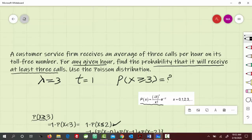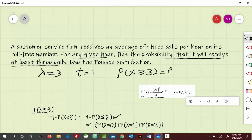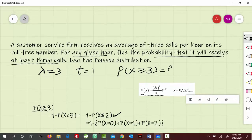P(x ≤ 2) means x could be 0, x could be 1, or x could be 2. We put this in parentheses, add these up, and subtract from 1.